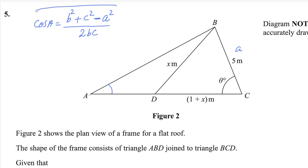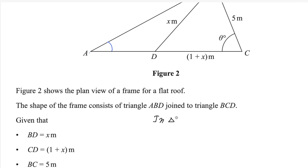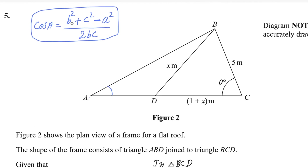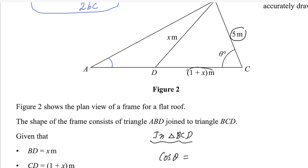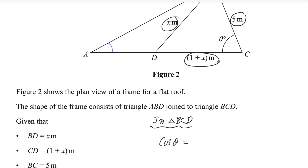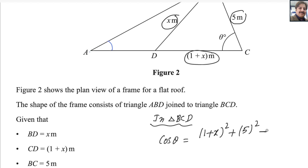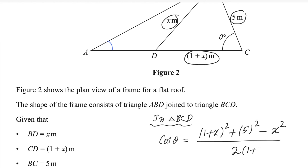Now consider triangle BCD. In triangle BCD, cosine theta equals, according to the law of cosines: we take the sum of squares of the adjacent sides. Here the adjacent sides are 5 and (1 plus x), and the opposite side to angle theta is x. So we take (1 plus x)² plus 5², then subtract x² (the square of the opposite side), divided by two times the product of the adjacent sides, which is 2 times (1 plus x) times 5.